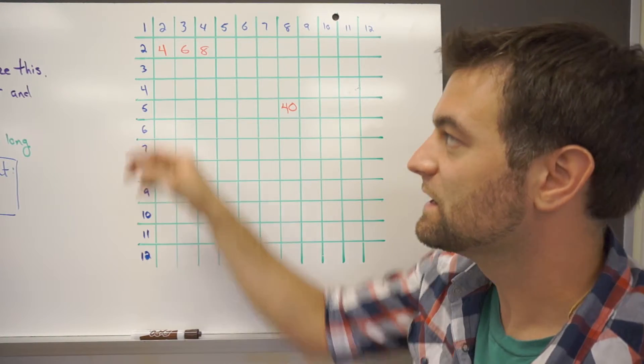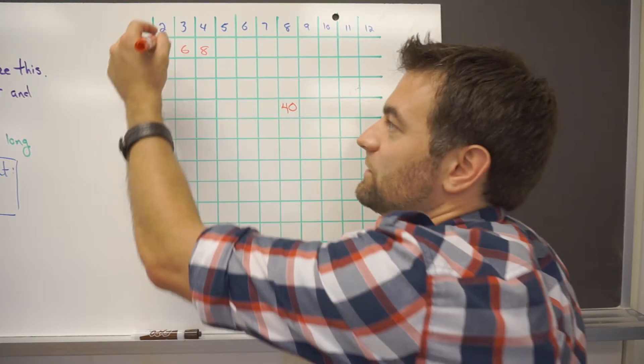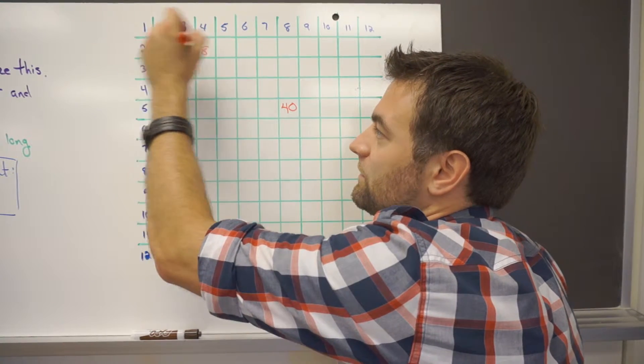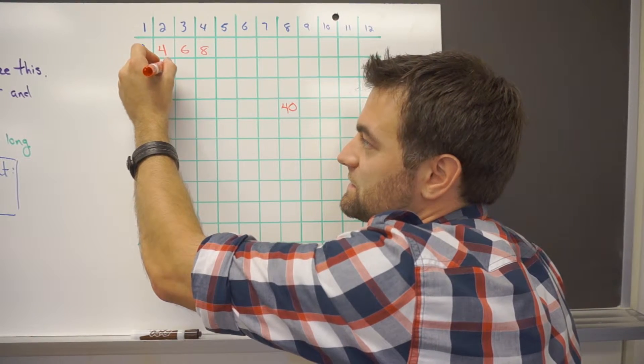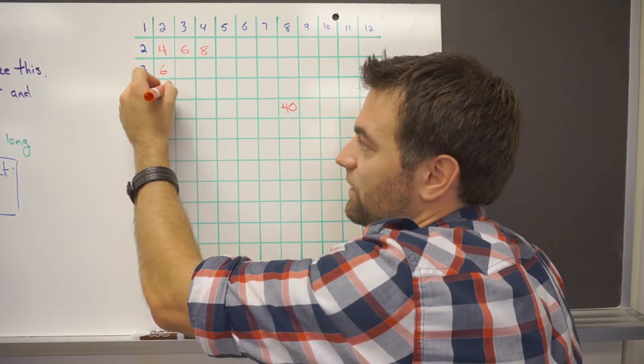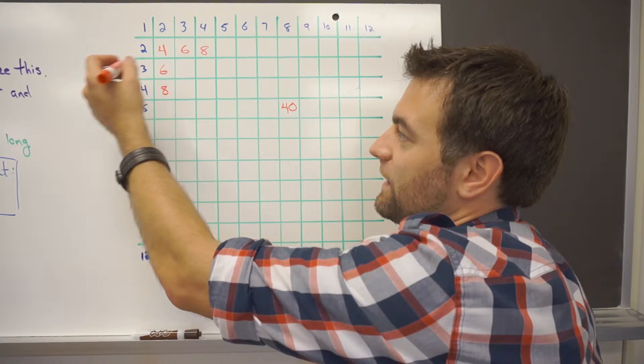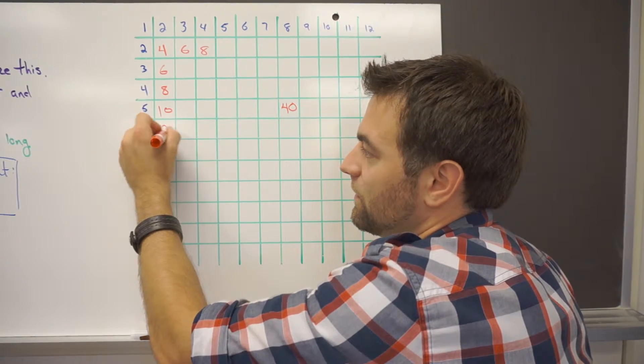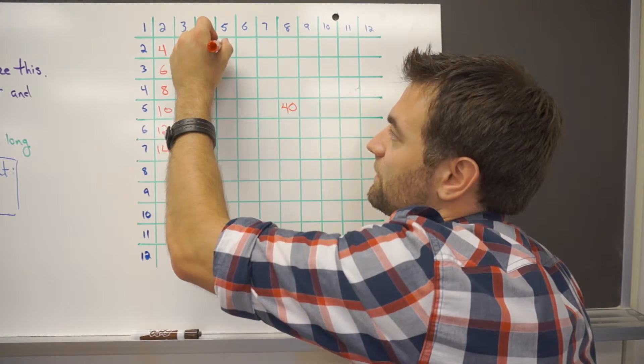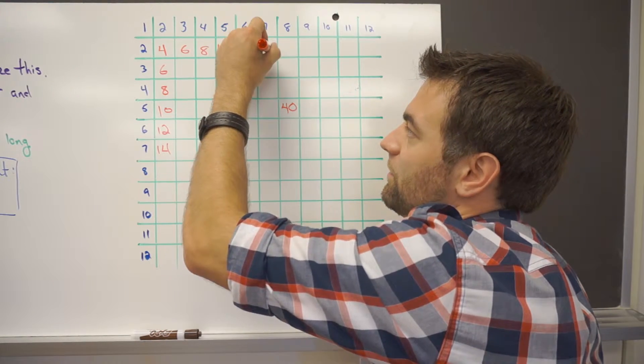And it'll also work this way. So notice if I start going down here, 2 times 2 is 4. 2 times 3 is 6. 2 times 4 is 8. And if I continue building a little bit here, we'll have 10, 12, 14, 10, 12, 14.